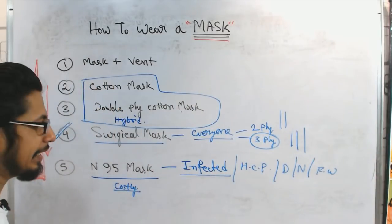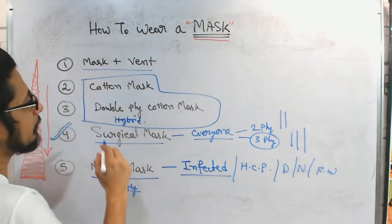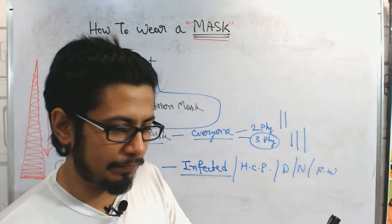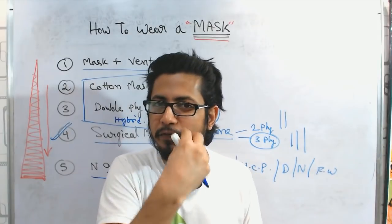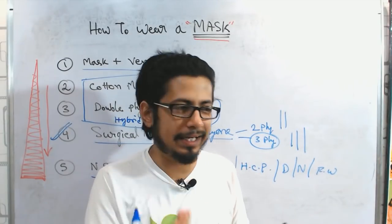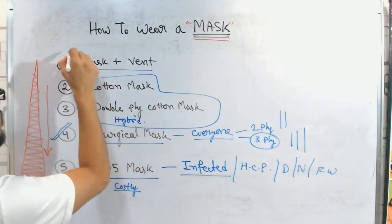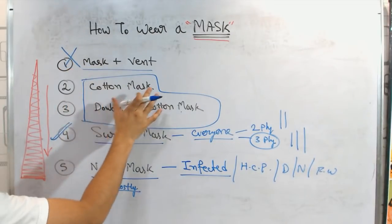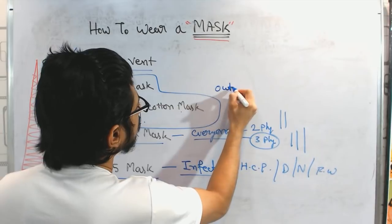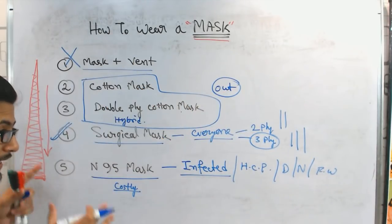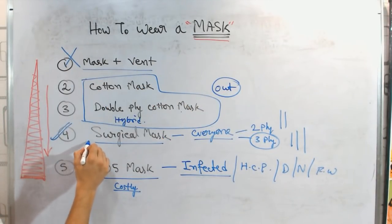But people wear it for style and the last one is mask with a vent. You know those masks, I don't have that unfortunately, but there are masks with a little vent like structures, so they are of no use because the vent opens up and things can go easily in and out. So you should not wear this mask anywhere. The cotton mask, any kind of cotton mask or hybrid mask, you can wear in outdoor settings. In indoor hospital climates you must wear surgical or N-95.